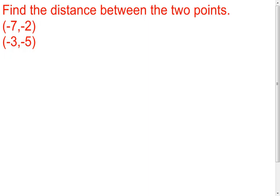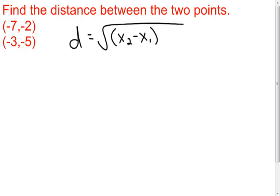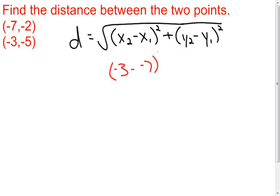I want you to think back to the distance formula. We have to subtract our x values and square them. We also have to subtract our y values and square them. Add that all together and then take the square root of everything. Plug in my numbers, take my x's, subtract them, then subtract my y values, square them, and don't forget the square root.